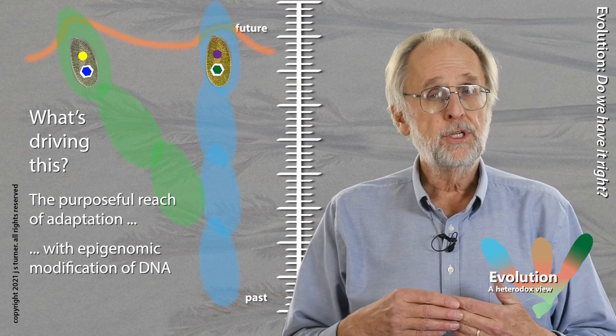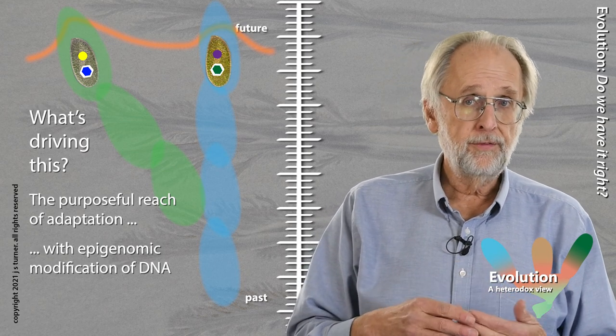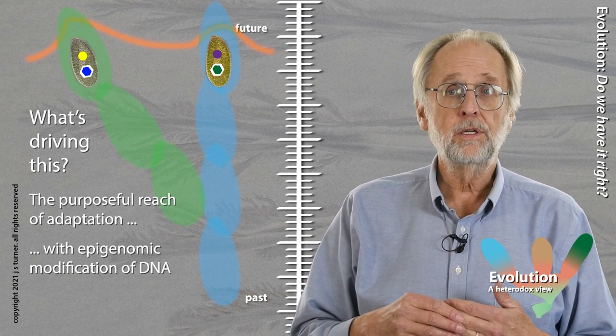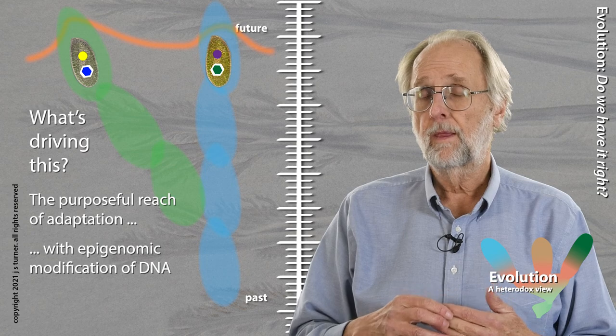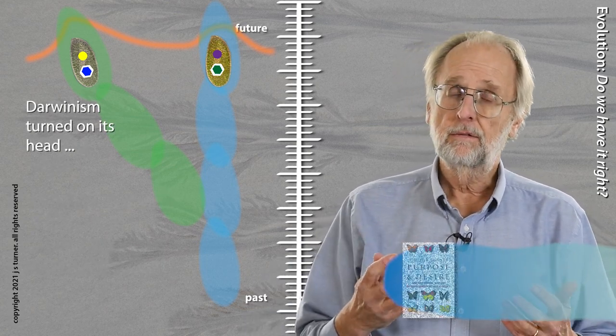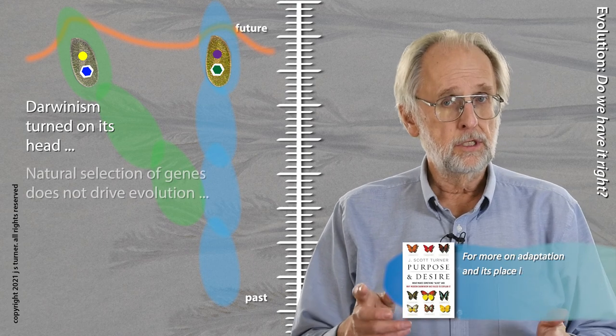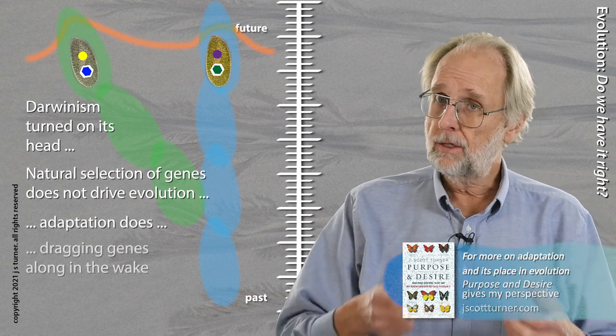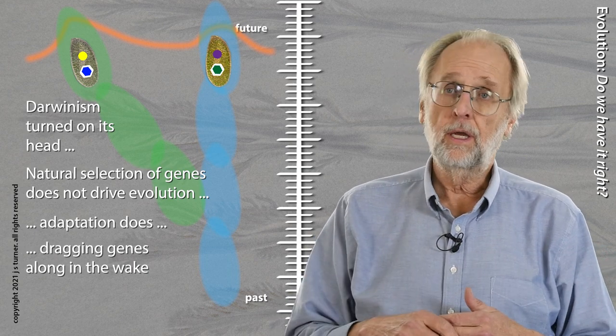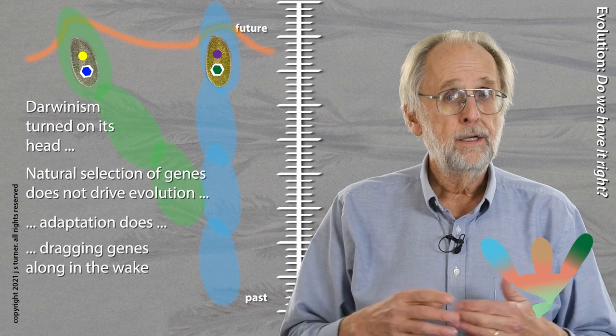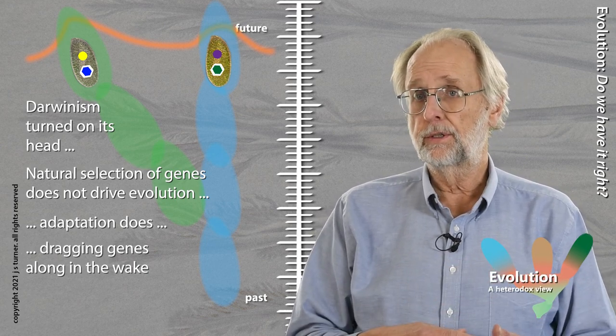As time proceeds, the epigenomic soft inheritance feeds back and modifies the memory tokens, the hard inheritance carried in the genome. So we've now turned the Darwinian idea on its head. The genes, the supposed carriers of hard inheritance, are actually being dragged along in the wake of ongoing adaptation by subsequent generations, in the wake of the purposeful striving of living creatures.